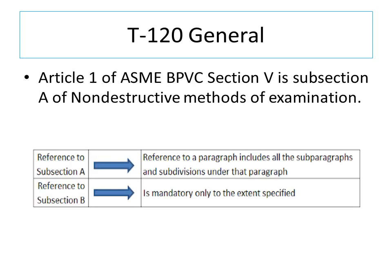Article 1 of ASME BPVC Section 5 is Subsection A of Non-Destructive Methods of Examination. Reference to a paragraph of Subsection A includes all the subparagraphs and subdivisions under that paragraph. Reference to Subsection B is mandatory only to the extent specified. This is an important point regarding what it means when references are made to Subsections A and B.